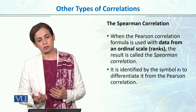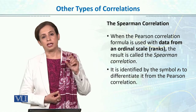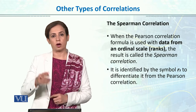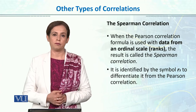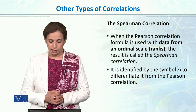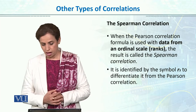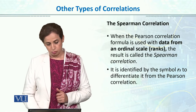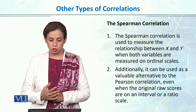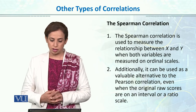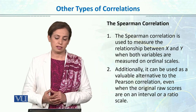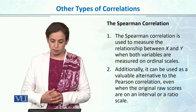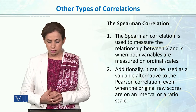In SPSS, you go to the correlation option and select Spearman instead of Pearson to get the correlation coefficient and p-value. The symbol for Spearman correlation is RS, whereas for Pearson product-moment we use R. The Spearman correlation is used to measure the relationship between X and Y when both variables are measured on an ordinal scale. Additionally, it can be used as an alternative to Pearson correlation even when the original raw scores are on an interval or ratio scale.